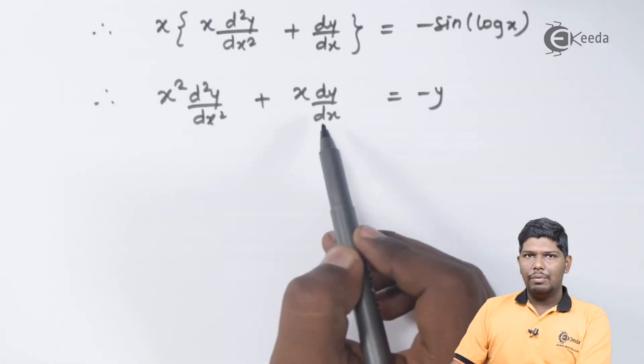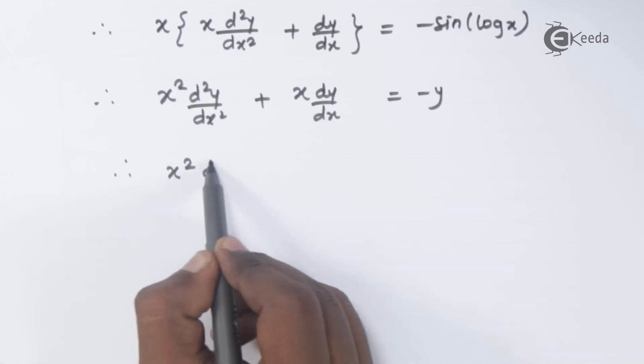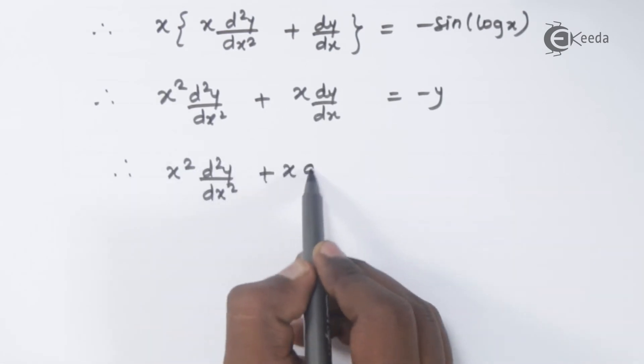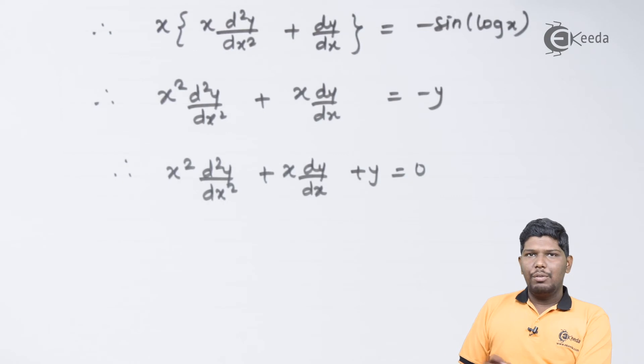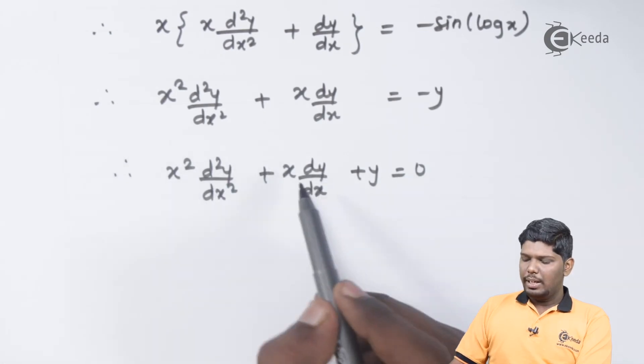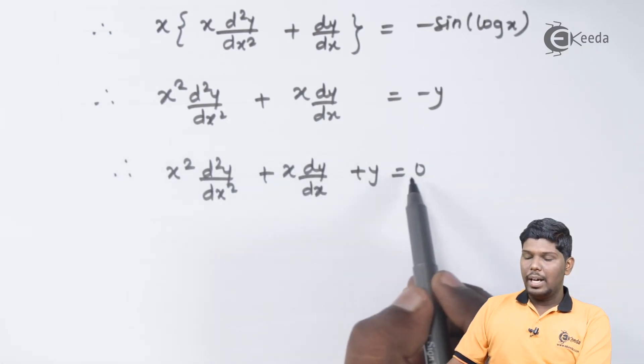Now, let us take this minus y on the left hand side. That will give you x square d2y by dx square plus x dy by dx plus y is equal to 0.